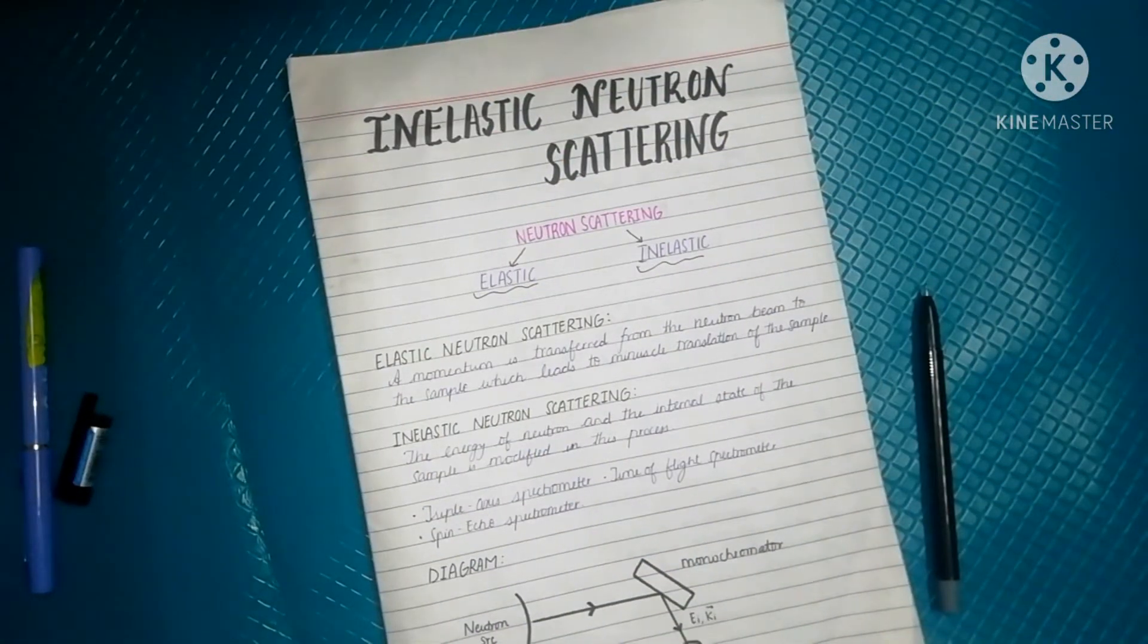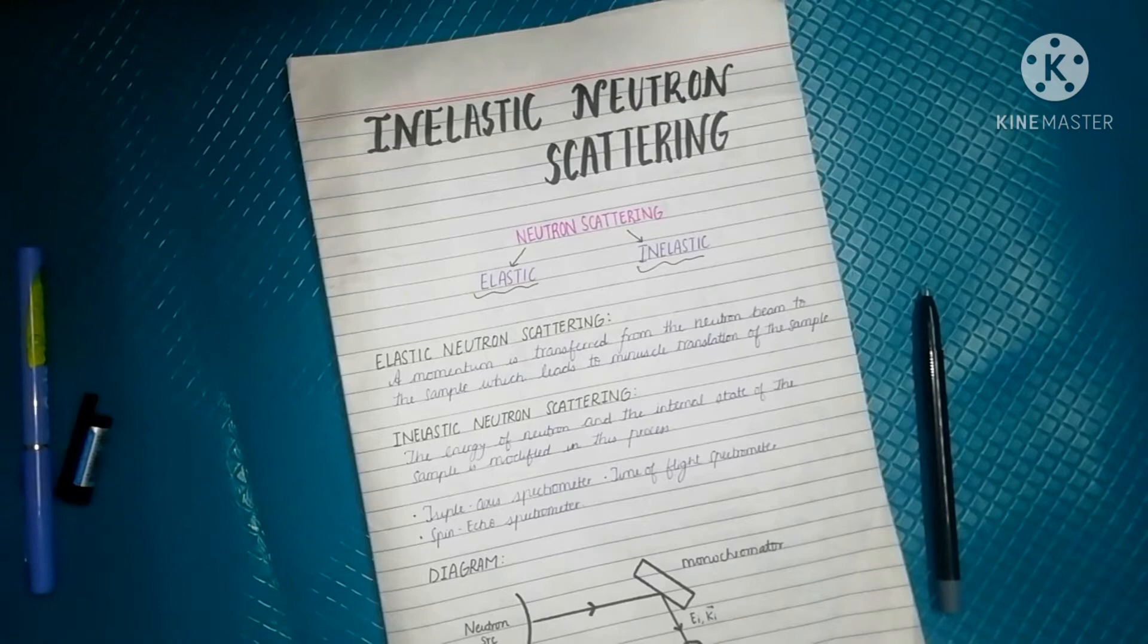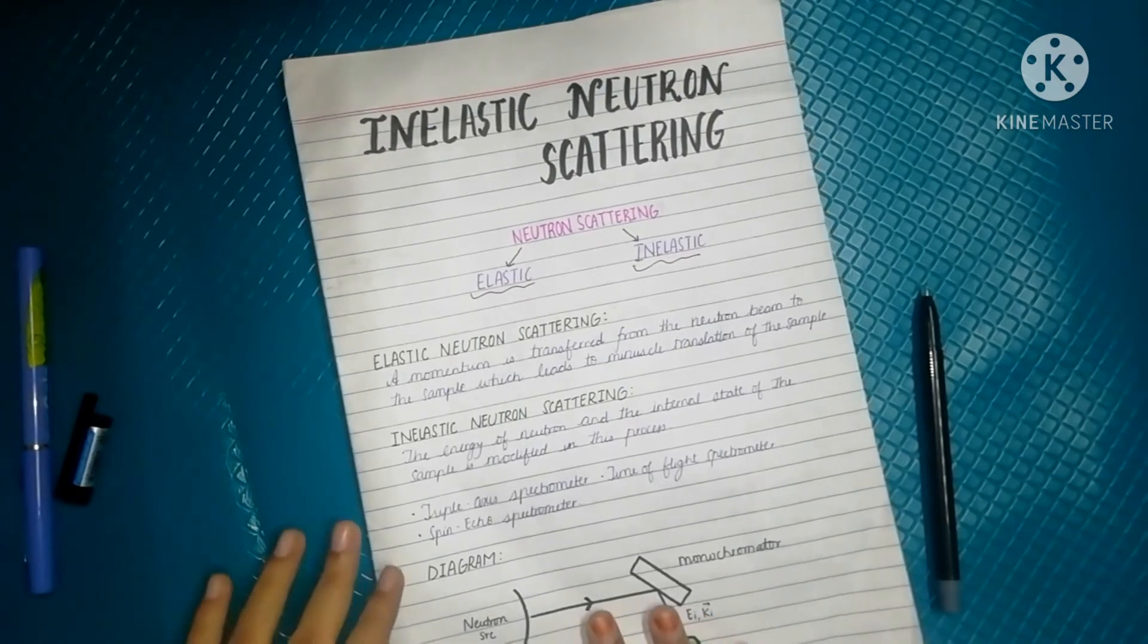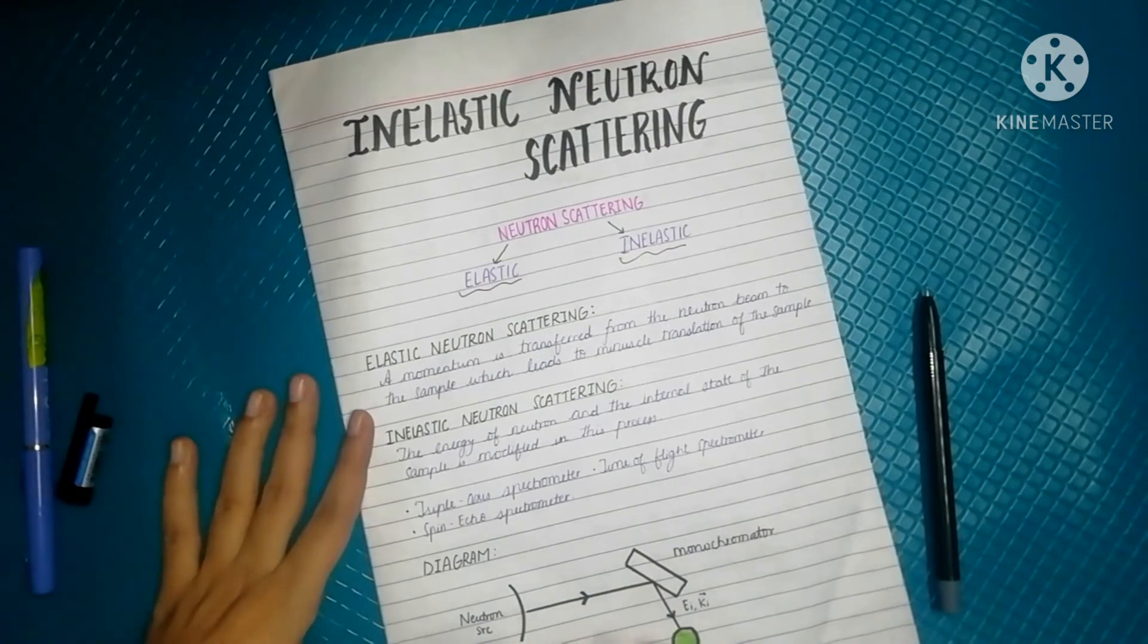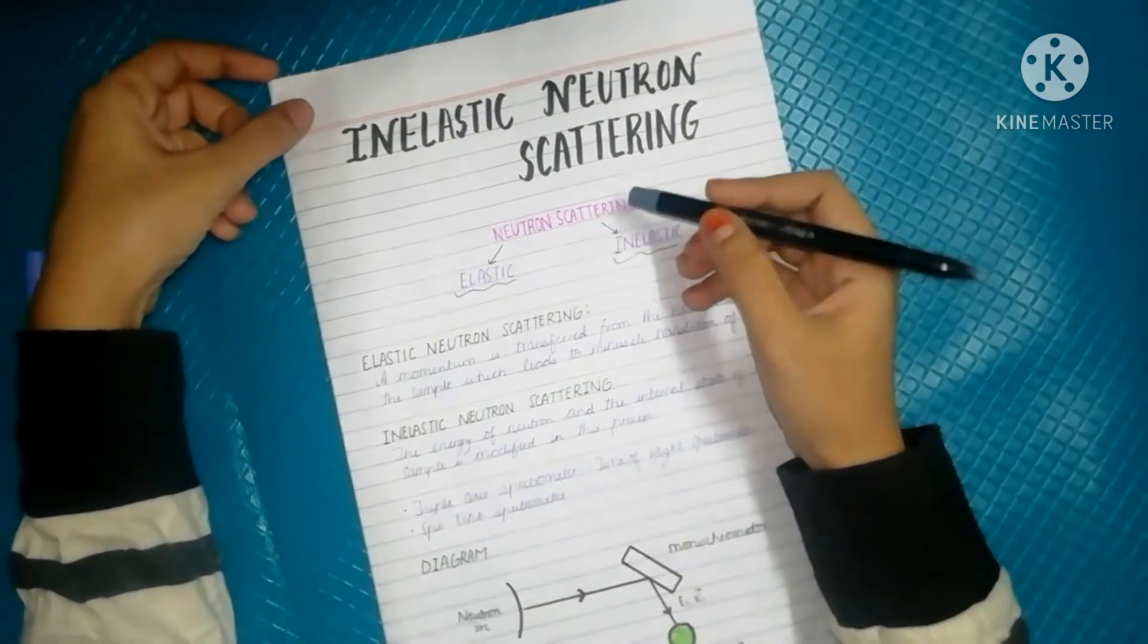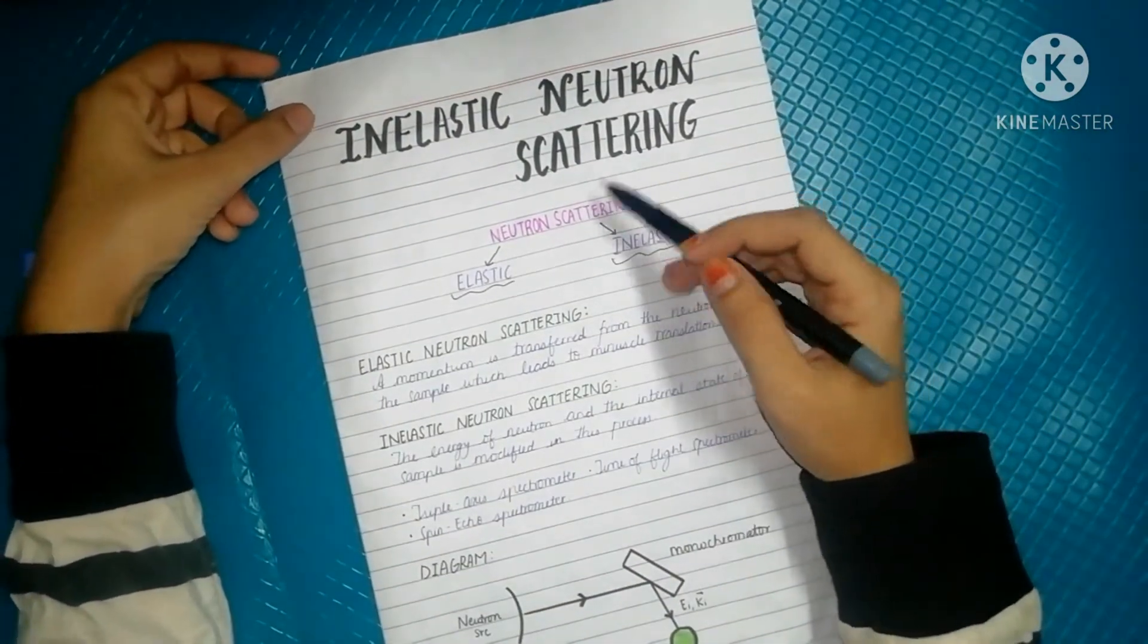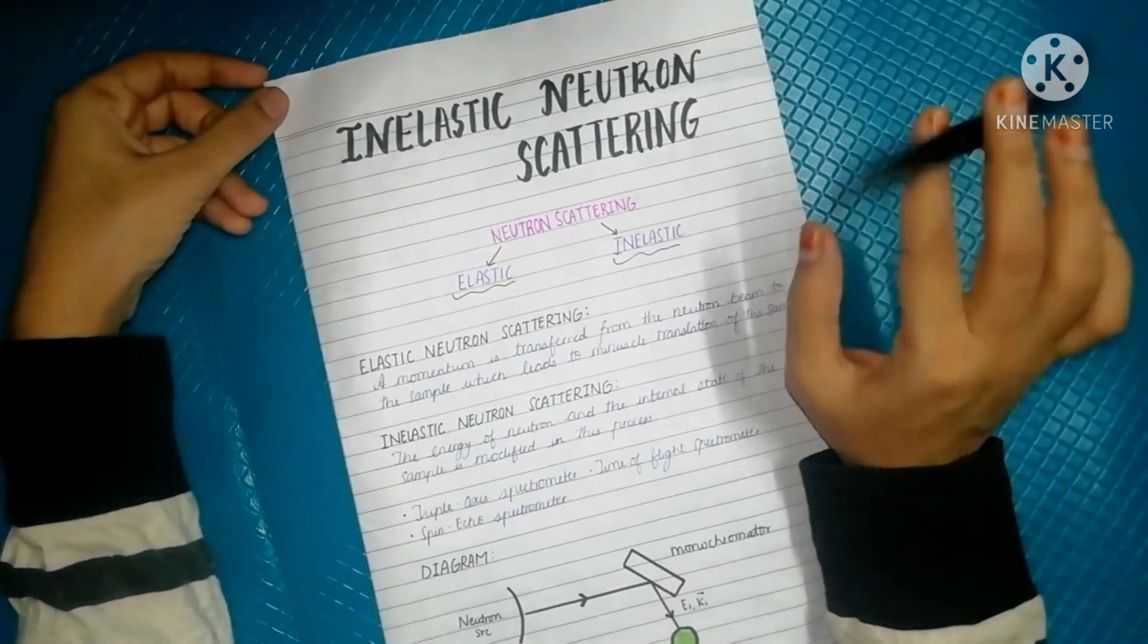Inelastic neutron scattering, what exactly it is and how it occurs. Hello everyone, welcome back to the channel. Today we'll study about inelastic neutron scattering. So let's start with the basics. Neutron scattering is classified into two types, that is elastic and inelastic neutron scattering.